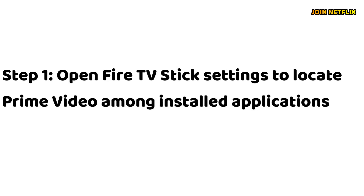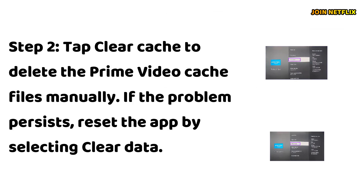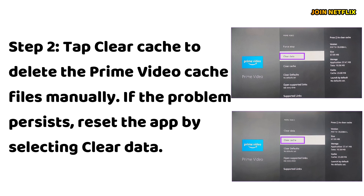Clear Prime Video Cache and Data. Step 1: Open Fire TV Stick Settings to locate Prime Video among installed applications. Step 2: Tap Clear Cache to delete the Prime Video cache files manually. If the problem persists, reset the app by selecting Clear Data.